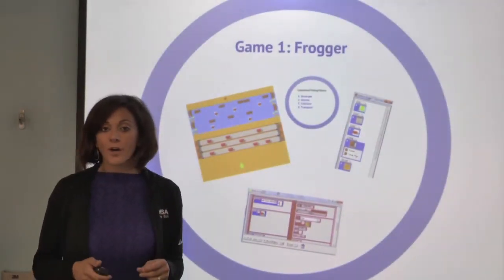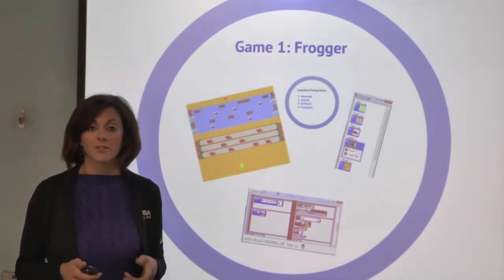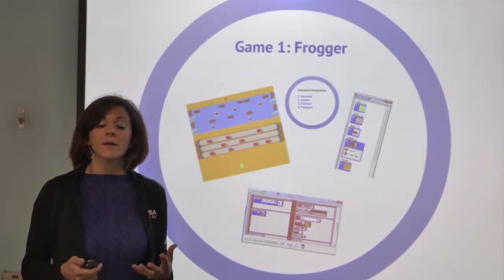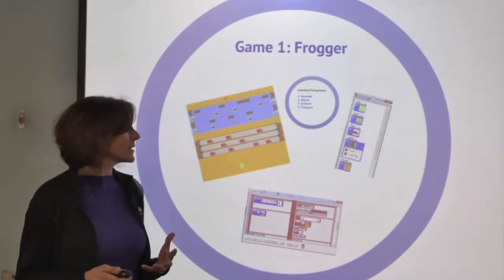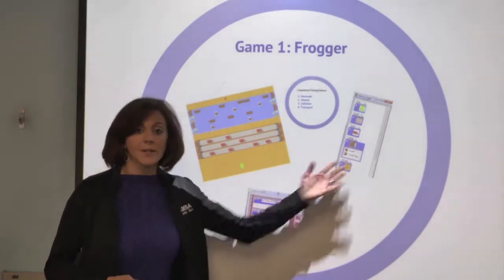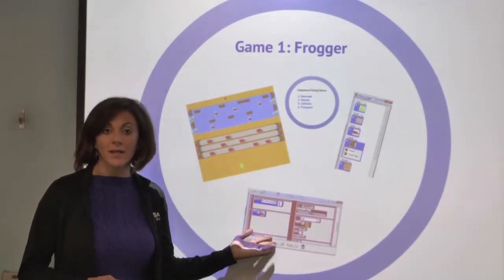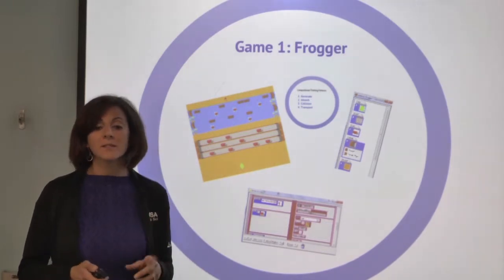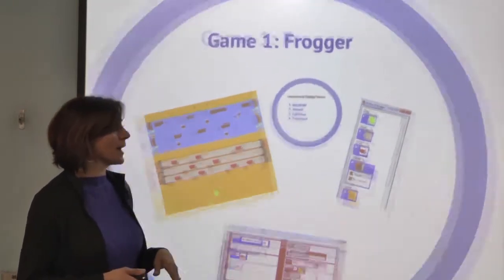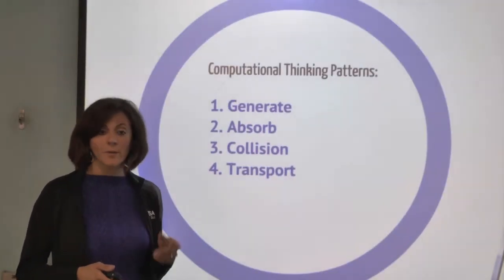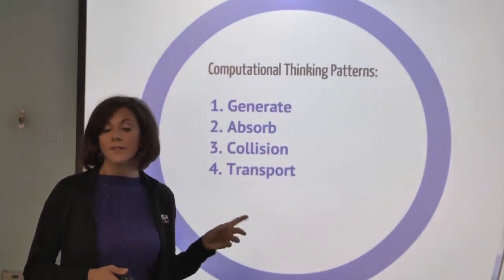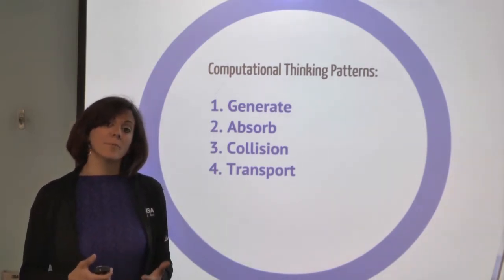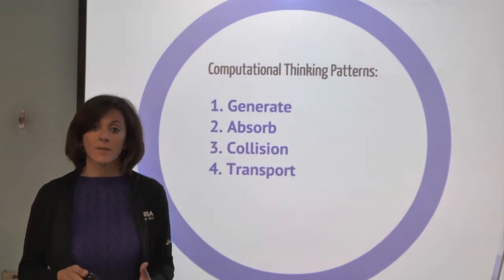I decided to begin with Frogger. I thought that was a great game to start with because it's on the simpler side, but it still introduces all the aspects of AgentSheets — so students get to understand what a gallery is, what the agents are, what the behavior looks like, and what a worksheet is. It also introduces basic computational thinking patterns like generate, absorb, collision, and transport. These are commonly used in a lot of games, so this was a good way to introduce patterns they would definitely use when making their own games.